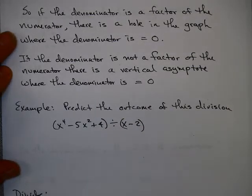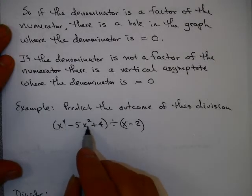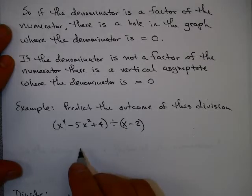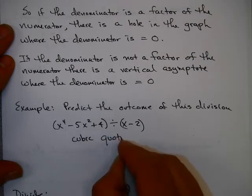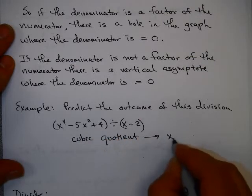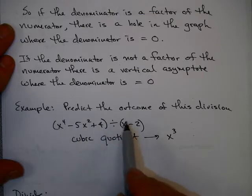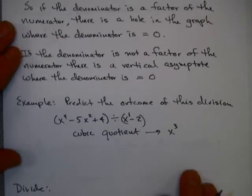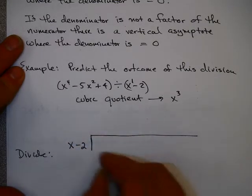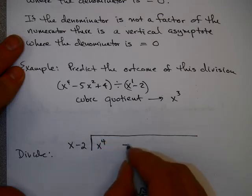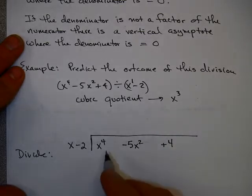So let's predict the outcome of this division. If I divide x to the fourth minus 5x squared plus 4 by x minus 2, I should get a cubic quotient. What that means is that my highest power should be x cubed, and that I can see from x to the fourth divided by x to the first. Now let's actually do this division, and I'm going to do this by long division. And I'm going to show you a trick. You'll notice I'm leaving some space in here, and there's a reason for that.